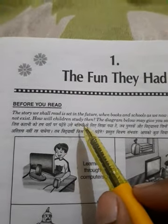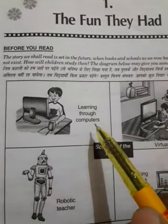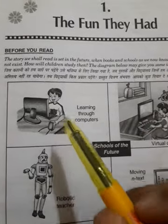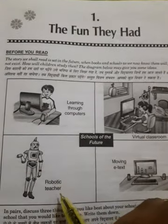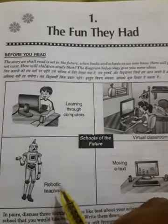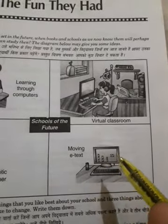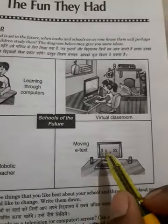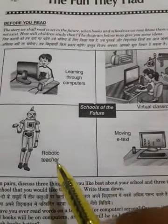So how will the children study then? The diagram below may give you some ideas. First, you can see here the picture of a boy learning through computers — when there will be no books or schools, children would learn from computers. Second is the virtual classroom — here you can see gadgets of different times; virtual means it is not a real class. Third is the robotic teacher, where a robot takes the place of real human beings. And now it's a moving e-text — electronic books — which have taken the place of real books.